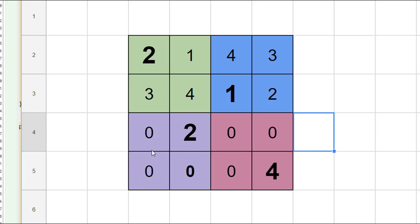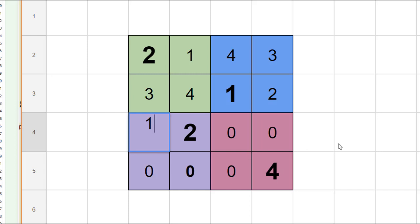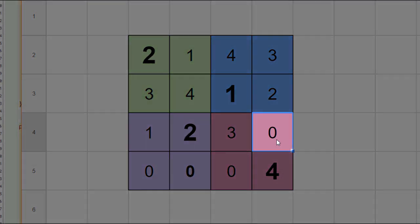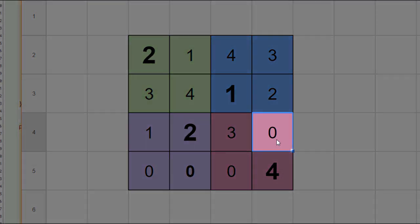Now we're all the way down into the first purple square and we're going to put in a one. Here we're going to put in a three. Now we get to this interesting square. We're going to try a one — that's no good.